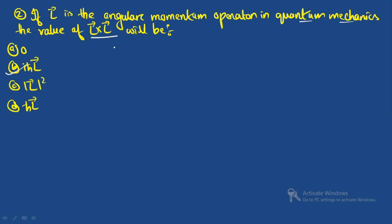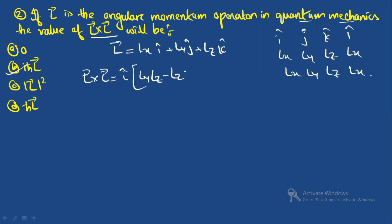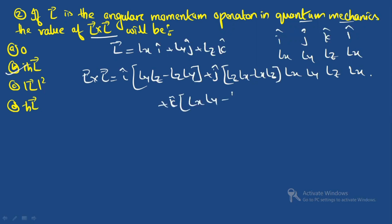We write L = L_x î + L_y ĵ + L_z k̂. To find L × L, we set up the determinant: | î ĵ k̂ | L_x L_y L_z | L_x L_y L_z |. This gives î(L_y L_z − L_z L_y) + ĵ(L_z L_x − L_x L_z) + k̂(L_x L_y − L_y L_x).